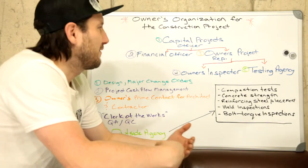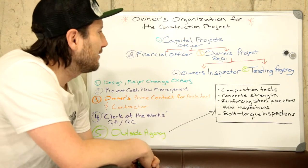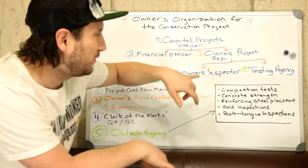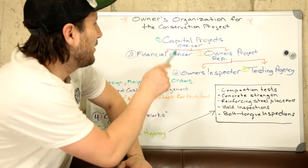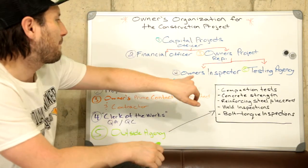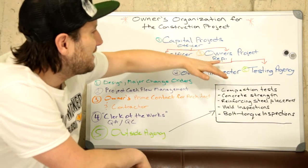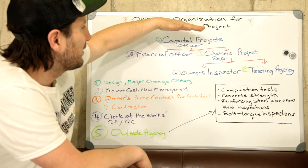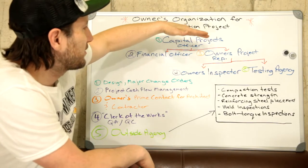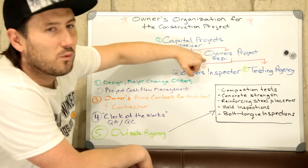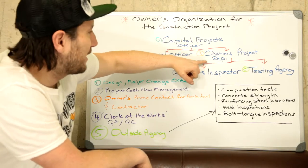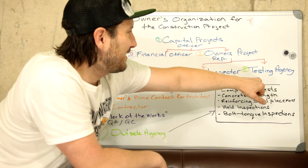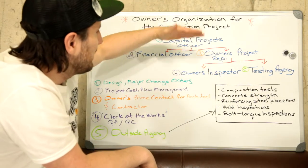The owner's project representative is like the owner's project manager — somebody who oversees the day-to-day construction. They're not necessarily on-site every single day, but they could be depending on the size of the project. Generally a project manager will have lots of projects going on. The owner's project rep needs to have a lot of knowledge in construction — they should know it inside and out, current and relevant.